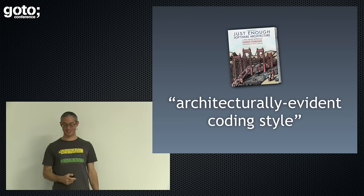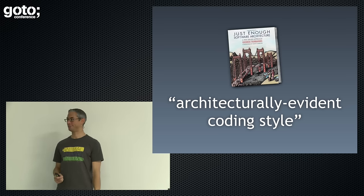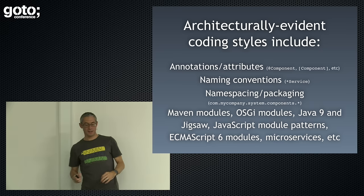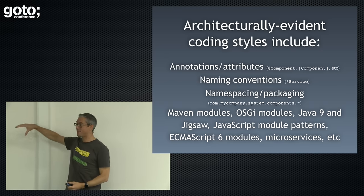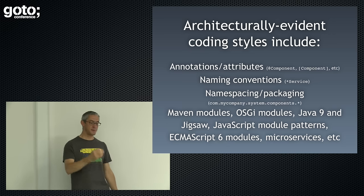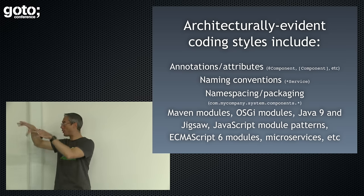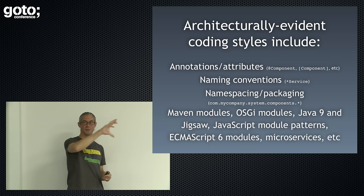George Fairbanks says we should adopt an architecturally evident coding style. It's a really simple technique about embedding information into your code base so that it reflects your architectural ideas and intent. In concrete terms, it's stuff like naming conventions. If you have a logging component on your architecture diagram, make sure there's something in your code base called a logging component. Maybe it's a namespacing or packaging convention — one folder, one namespace, one package per box on the diagram. Or maybe it's machine-readable metadata — annotating stuff as 'this is a component.'